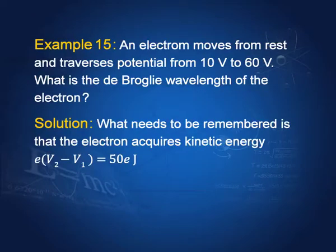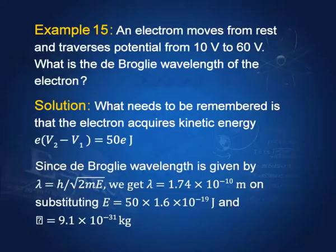An electron moves from rest and goes through a potential from 10 V to 60 V. What is the de Broglie wavelength of the electron? The electron acquires kinetic energy e times (V₂ minus V₁). The potential difference is V₂ minus V₁ = 50 V, so the energy is 50e joules. The de Broglie wavelength is h divided by the square root of 2mE. Knowing E, h, and m, lambda turns out to be 1.74 into 10 to the power minus 10 meters.